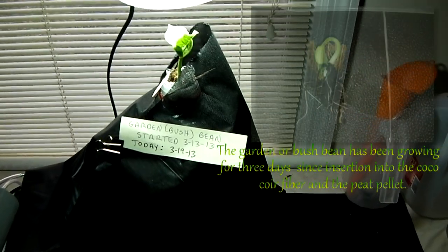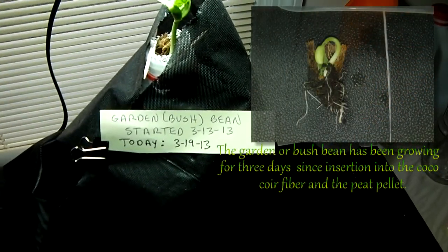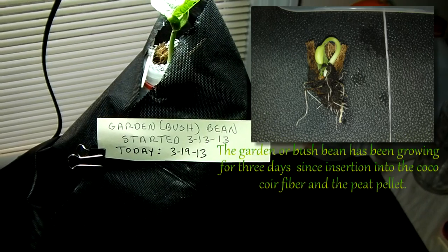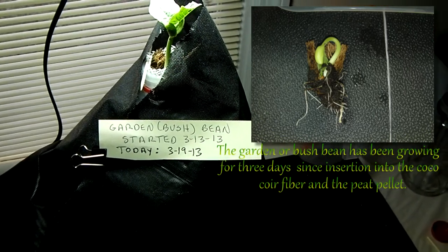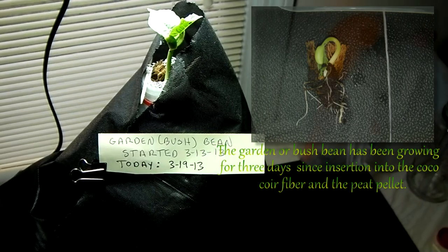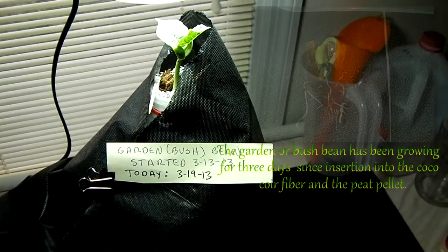Well, this is the gardener bush bean. I started this back on March 13th. Today is March 19th. So it's been growing around 7 days from when I put the seed in the peat pellet to now.